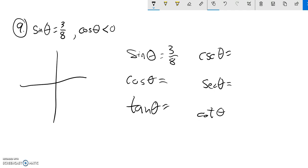Sine is 3/8, which is positive, so I know it's going up. Cosine is less than 0, so it's negative, meaning it goes to the left. Theta is this rotation right here. Sine is y over r, the height, so if that's 3, then r is 8.